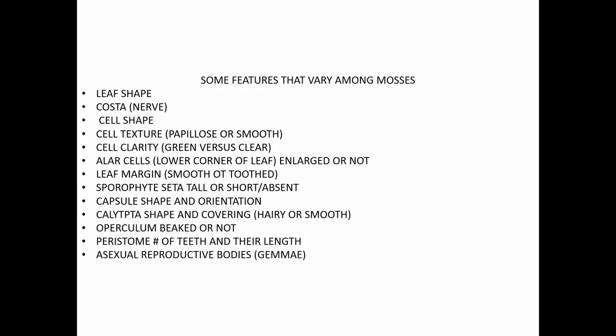Features that vary among mosses include the shapes of the leaves; whether or not they have a nerve called a costa; cell shape through the compound microscope — long and narrow, or equal-sided; whether cells are bumpy (papillose) or smooth; whether cells are sometimes clear; and the alar cells at the lower corners of the leaf, which typically help the leaves expand when moist. Leaf margins can be toothed or entire. Sporophytes, when present, can be helpful in identification.